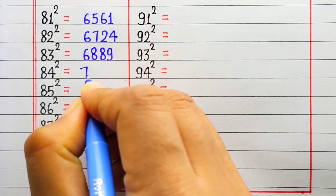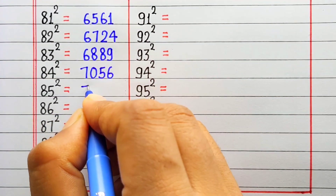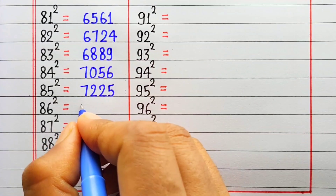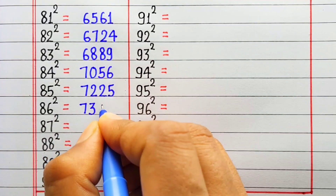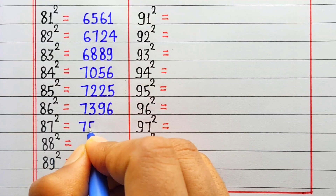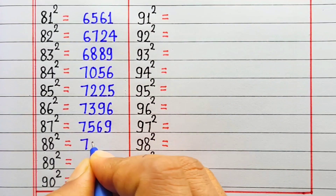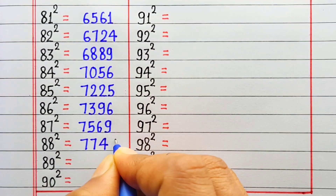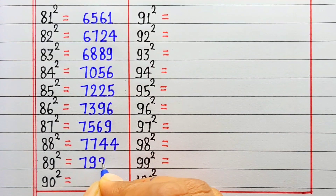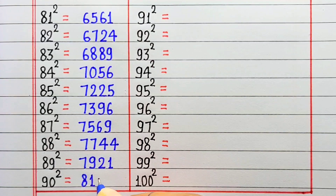Square of 84 is 7056. Square of 85 is 7225. Square of 86 is 7396. Square of 87 is 7569. Square of 88 is 7744. Square of 89 is 7921. Square of 90 is 8100.